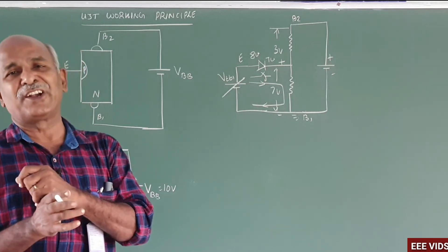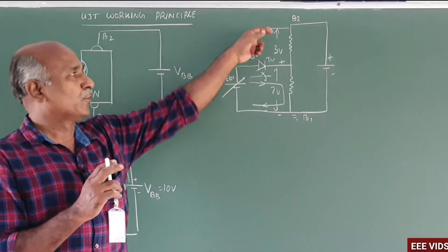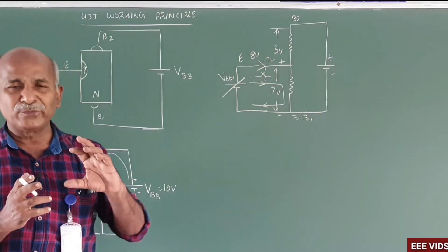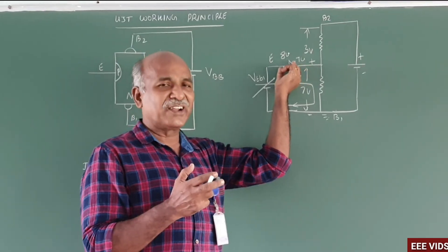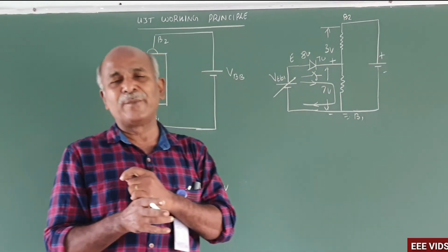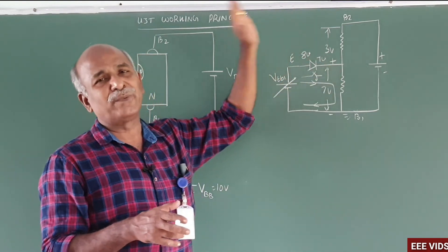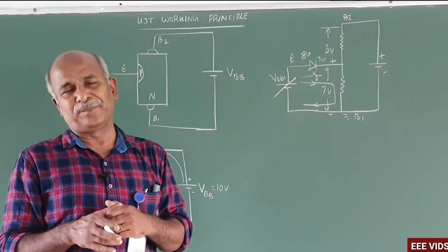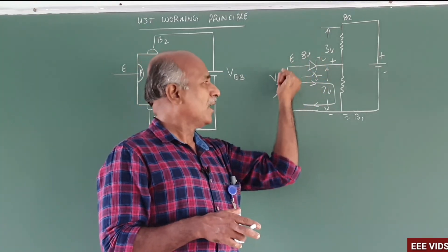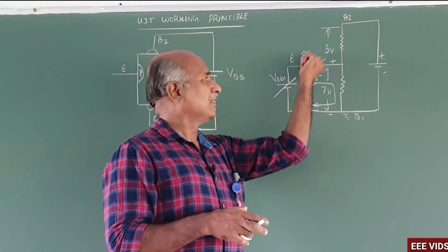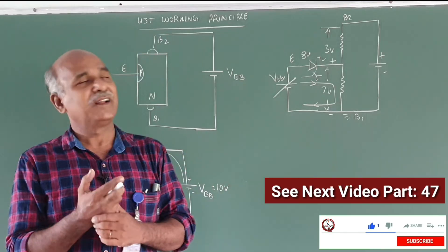After the UJT conducts, we get the base-1 to base-2 supply, and the voltage divides — one portion from base-2 to emitter, another from emitter to base-1. Initially, the emitter junction is reverse biased. When the applied emitter-to-base-1 voltage exceeds the drop across R-B1, conduction begins. This is the UJT operating characteristic.